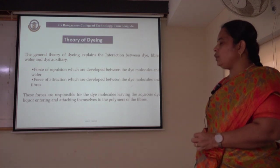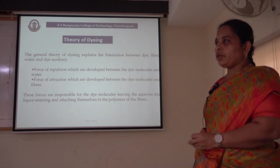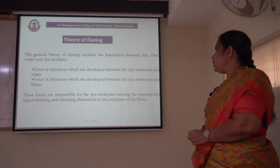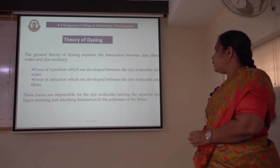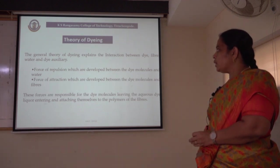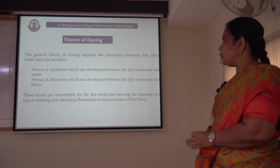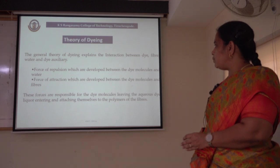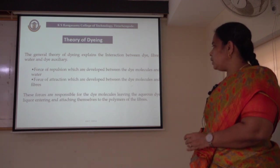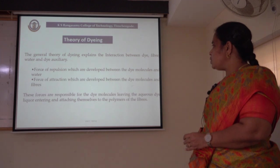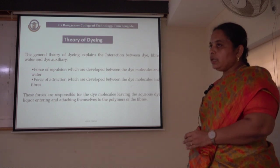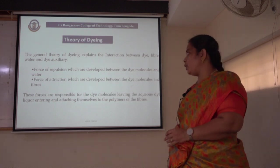Next, we are going to discuss about the theory of dyeing, which is a very important factor when going for the dyeing of textile materials. The general theory of dyeing explains the interaction between the dye and the fibre, water, and the dye auxiliaries used in the dyeing process. It is the force of repulsion developed between the dye molecules and water, and the force of attraction developed between the dye molecules and the fibres, that are responsible for the dye molecules leaving the liquid and attaching themselves to the polymers of the fibres. All textile fibres are either natural polymers or synthetic polymers.